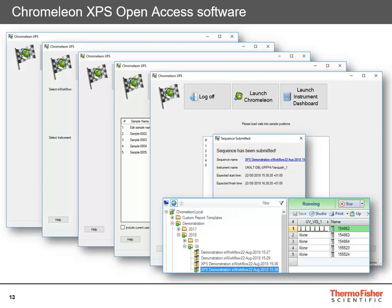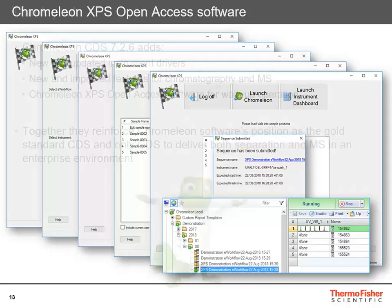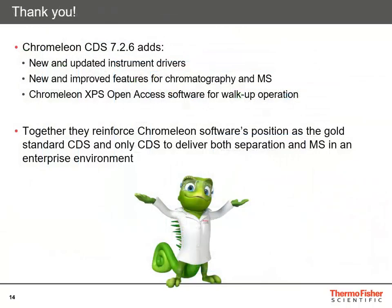So accessing and using the whole power of Chromelion from a very simple interface to get runs going, without even needing to know how to use Chromelion. Chameleon 7.2.6 has several new and updated instruments, new and improved features around chromatography, features for mass spectrometry, and the Chromelion Express open access interface.